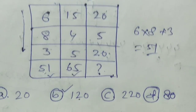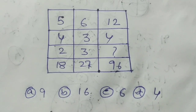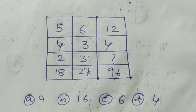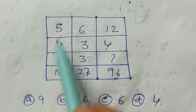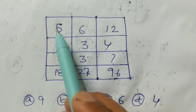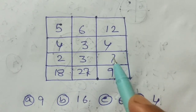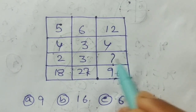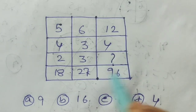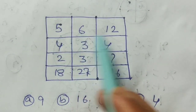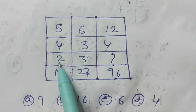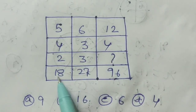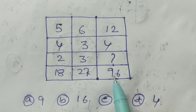Now the next question. The numbers given are 5, 6, 12, 4, 3, 4, 2, 3, and a missing number, with 18, 27, and 96. What is the missing number here?